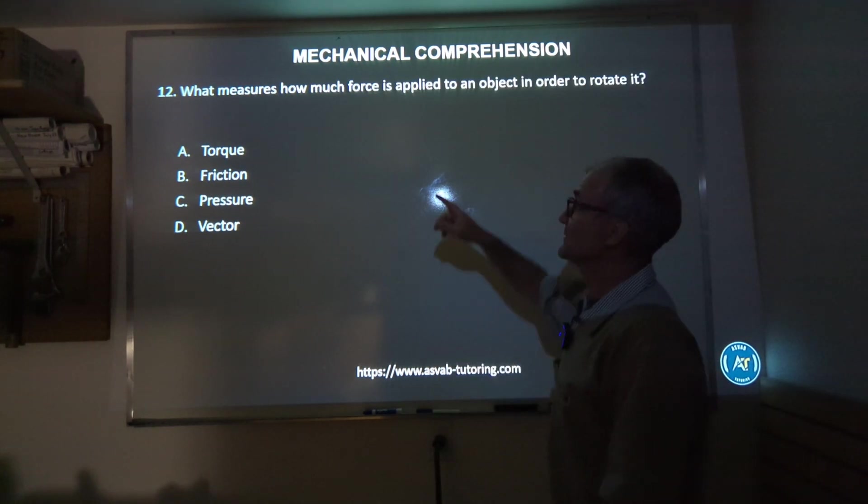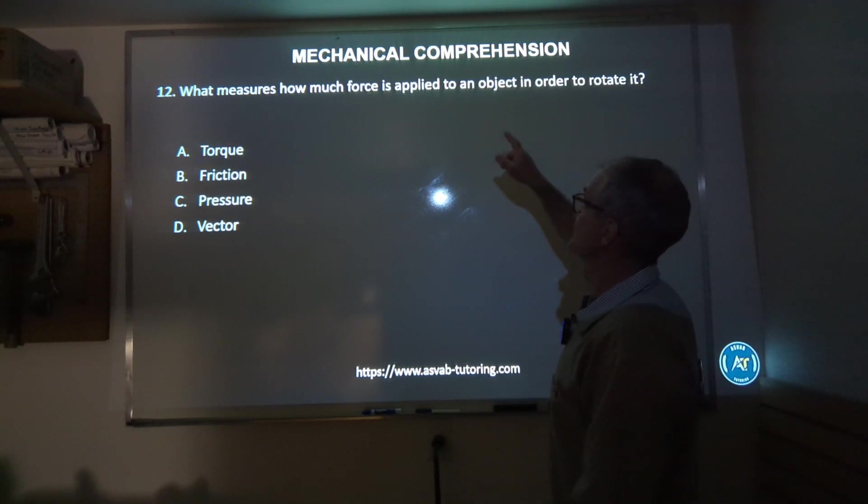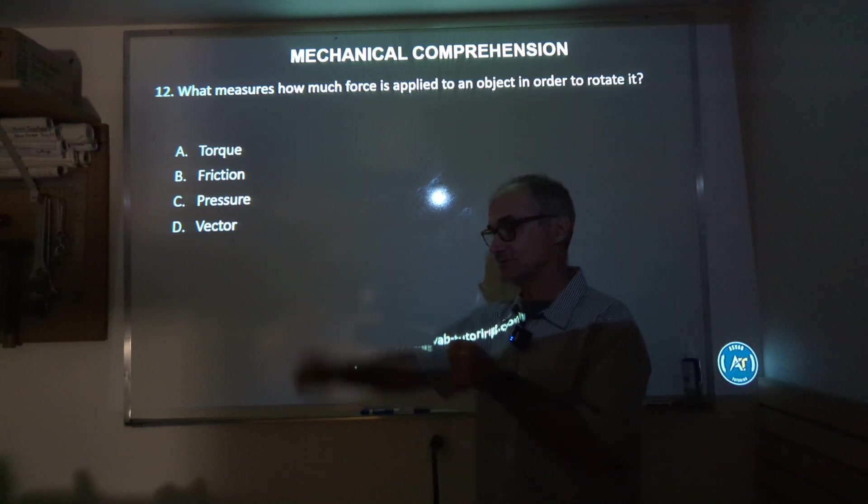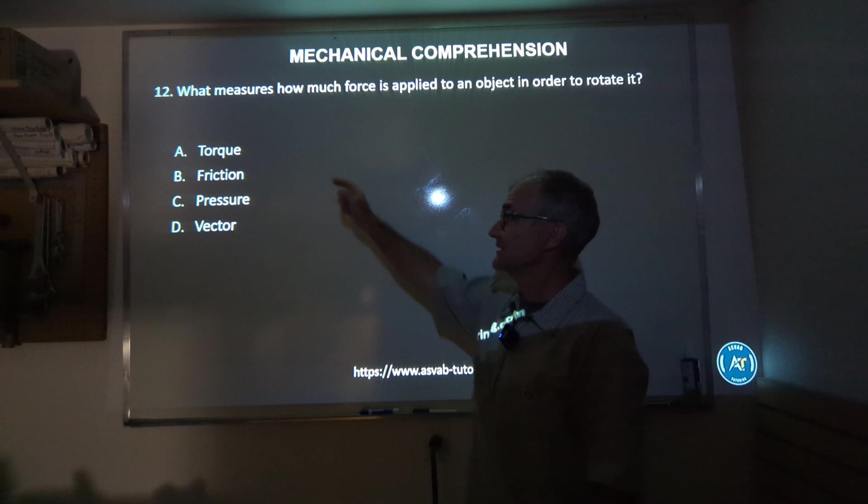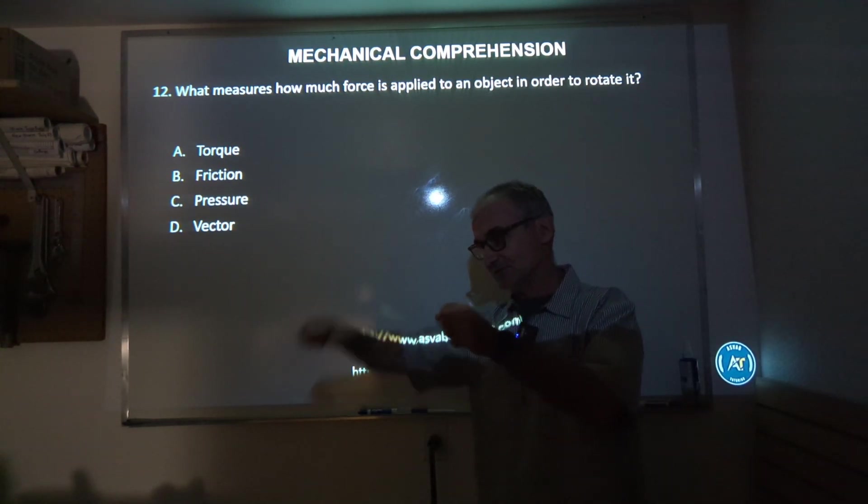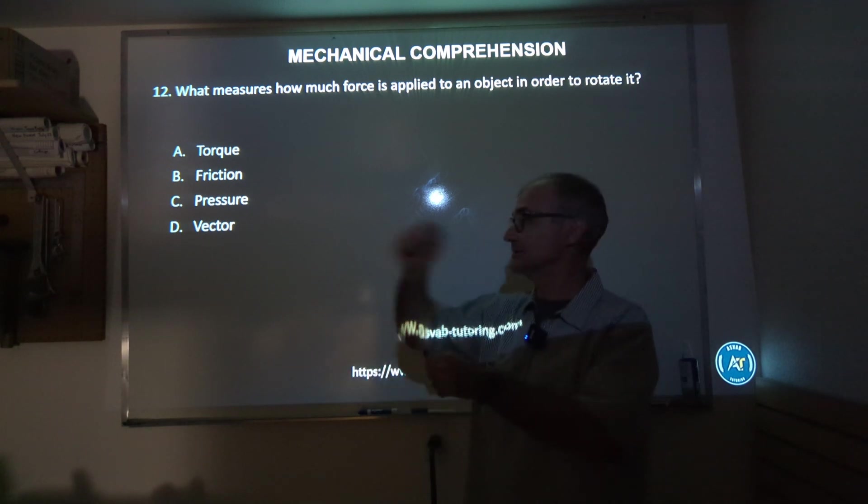Number 12: what measures how much force is applied to an object in order to rotate it? So a rotational force is called A, torque. So torque is how much force it takes to move a lever around a pivot point.